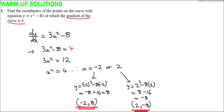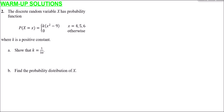Let's think about question 2 now. We have a discrete random variable X with probability function P(X = x) = k(x² − 9), where x is either 4, 5, or 6, and the probability is 0 otherwise, where k is a positive constant. For part 2a, we need to show that k = 1/50. This is essentially a GCSE probability table dressed up in A-level notation.